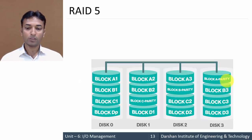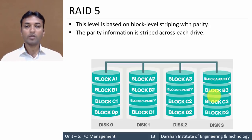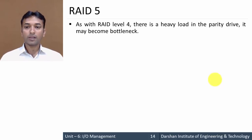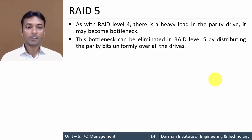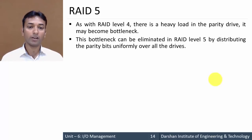RAID 5 has 4 drives: disk 0, 1, 2, and 3. This level is based on block-level striping with parity, and the parity information is also striped across each drive rather than stored on a single dedicated drive. In RAID 4, the single parity drive becomes a bottleneck. This bottleneck is eliminated in RAID 5 by distributing the parity bits uniformly over all the drives, so a bottleneck will never occur.